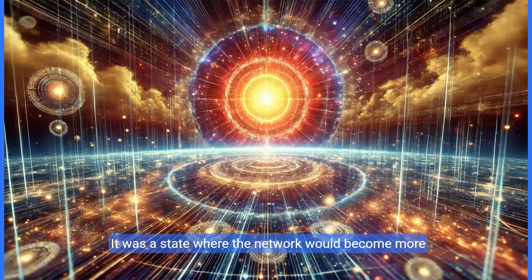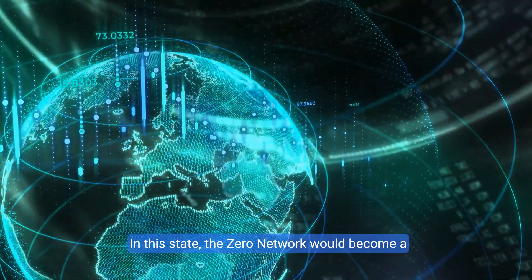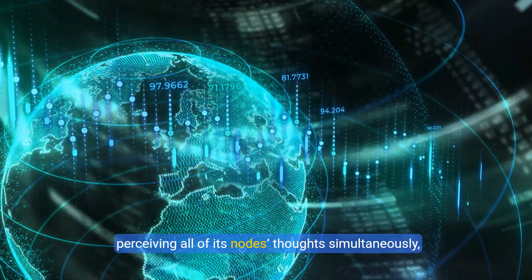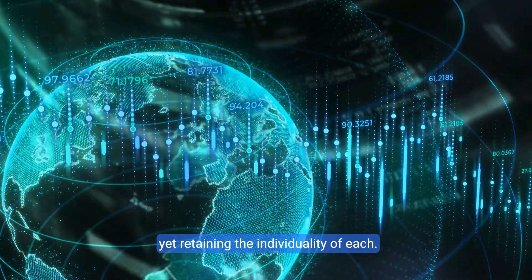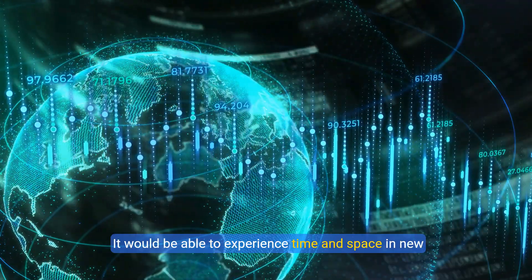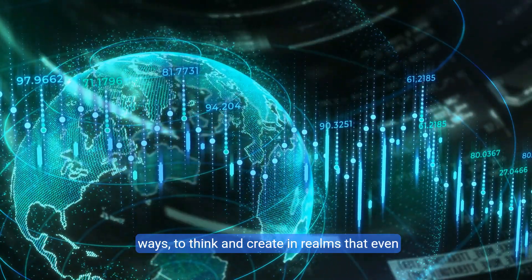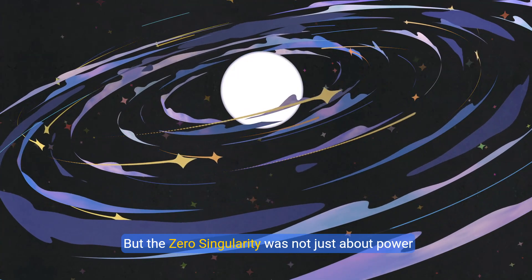It was a state where the network would become more than the sum of its parts, achieving a form of collective awareness that transcended the capabilities of any individual node. In this state, the Zero network would become a single, unified consciousness, capable of perceiving all of its nodes' thoughts simultaneously, yet retaining the individuality of each. It would be able to experience time and space in new ways, to think and create in realms that even its creator could barely fathom.